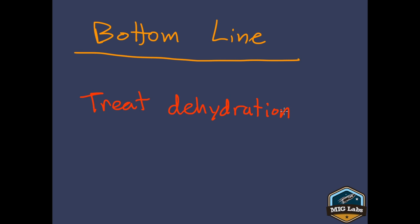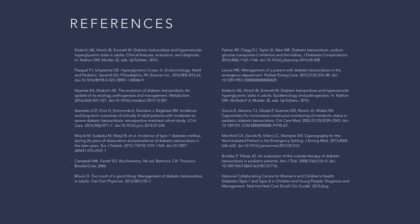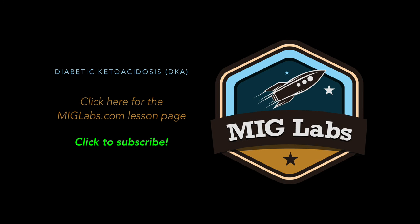The bottom line for EMS, the main thing we're going to do here, for the pre-hospital setting, you want to treat the dehydration. That is what's going to kill the patient much more quickly than anything else. And that's also what we have the power, we have the ability to fix pre-hospitally is that dehydration. So I hope you've learned something about DKA. If you have any follow-on questions or something wasn't clear, go ahead and go over to our website, miglabs.com. There's a form there where you can submit questions and you can submit suggestions or clarifications. Thanks for joining us and I look forward to seeing you all on the next lesson.